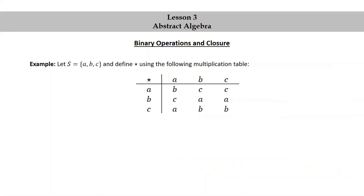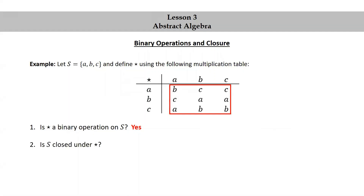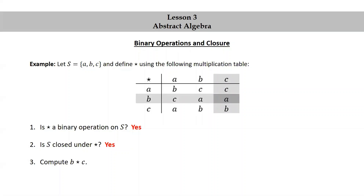Let's look at another example. Let S be the set consisting of A, B, and C, and define star using the following multiplication table. Is star a binary operation on S? Notice that all of the outputs are either A's, B's, or C's, so the answer is yes. Is S closed under star? That's just another way of asking the same question, so the answer is yes. Compute B star C: we look at the entry in the row given by B and the column given by C, and we see that B star C is equal to A.